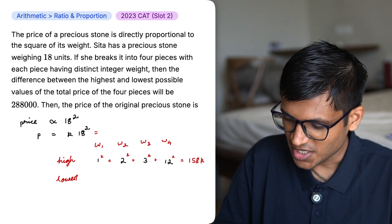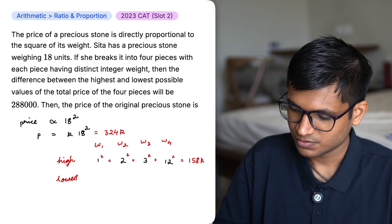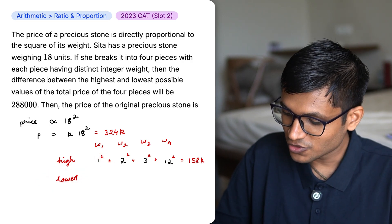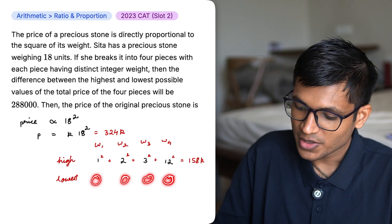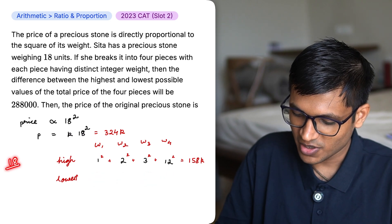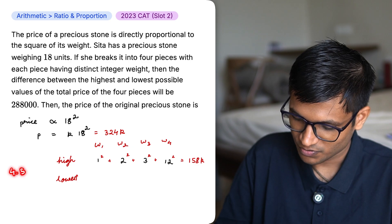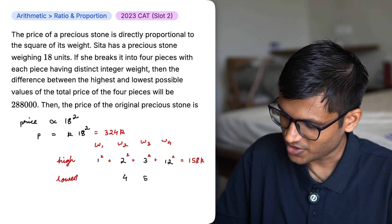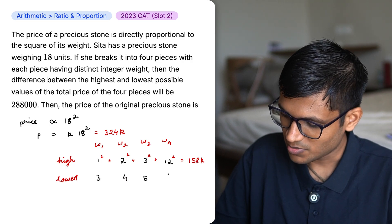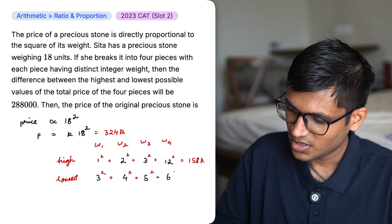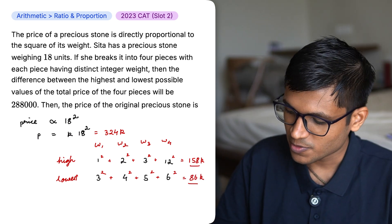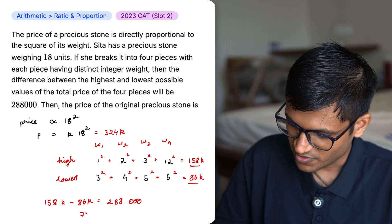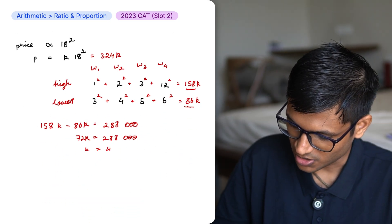In comparison, 18 square was 324. If I want the lowest value of the sum of all the squares, I would not want to keep a very high number over here. So if I have 18 and if I divide that by 4, I get 4.5. So if that is my average, I can say that this can be 4, this can be 5, this can be 3, and this can be 6. Now the sum of these squares end up to be 86k. Now the difference between the highest and the lowest possible weight is 2,88,000. This gives us 72k. Hence k equals 4,000.